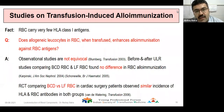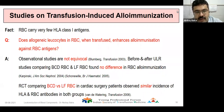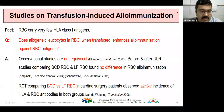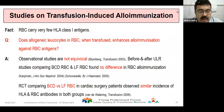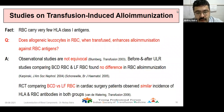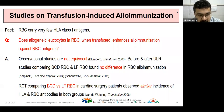Studies on transfusion-induced alloimmunization state that RBCs carry very few HLA class 1 antigens, but the question remains whether allogeneic leukocytes in RBCs, when transfused, enhance alloimmunization against RBC antigens. Observational studies are not equivocal. Before-and-after universal leukoreduction studies comparing buffy coat depleted RBCs with leukofiltered RBCs by Carpinski and Seanwell found no difference in RBC alloimmunization. Randomized controlled trials comparing buffy coat depleted and leukofiltered RBCs in cardiac surgery also observed similar incidence of HLA and RBC antibodies in both groups.